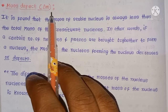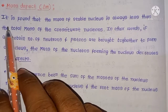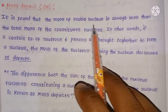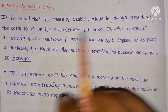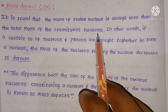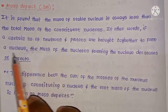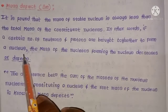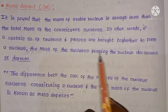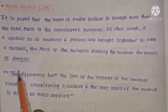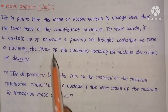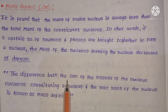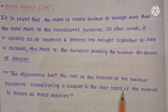Mass defect can be denoted by delta m (Δm). It is found that the mass of a stable nucleus is always less than the total mass of its constituent nucleons. In other words, when a certain number of neutrons and protons are brought together to form a nucleus, the mass of the resulting nucleus decreases — this is called mass defect.